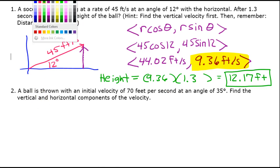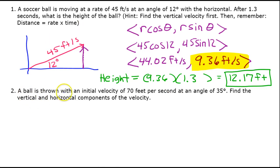Now look at number two. A ball is thrown with an initial velocity of 70 feet per second at an angle of 35 degrees. Now this time they simply want us to find the vertical and horizontal components of this velocity. So let's make another diagram similar to what we did before.